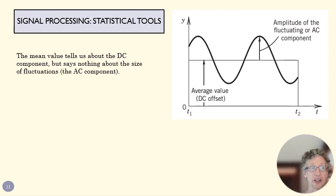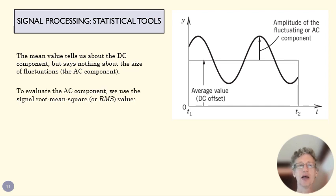The mean value tells us about the DC component, but it doesn't tell us anything about the fluctuations in the signal, the AC component or alternating current component. We can evaluate that AC component and the size of that by using what's called the root mean square or RMS value, and that is this equation here.